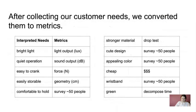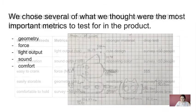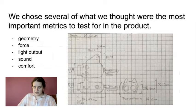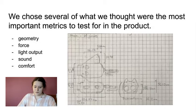After collecting our needs, we converted them to metrics and decided how we could measure them. We decided on several metrics that we thought were most important to measure. These were geometry, force, light output, sound, and comfort.